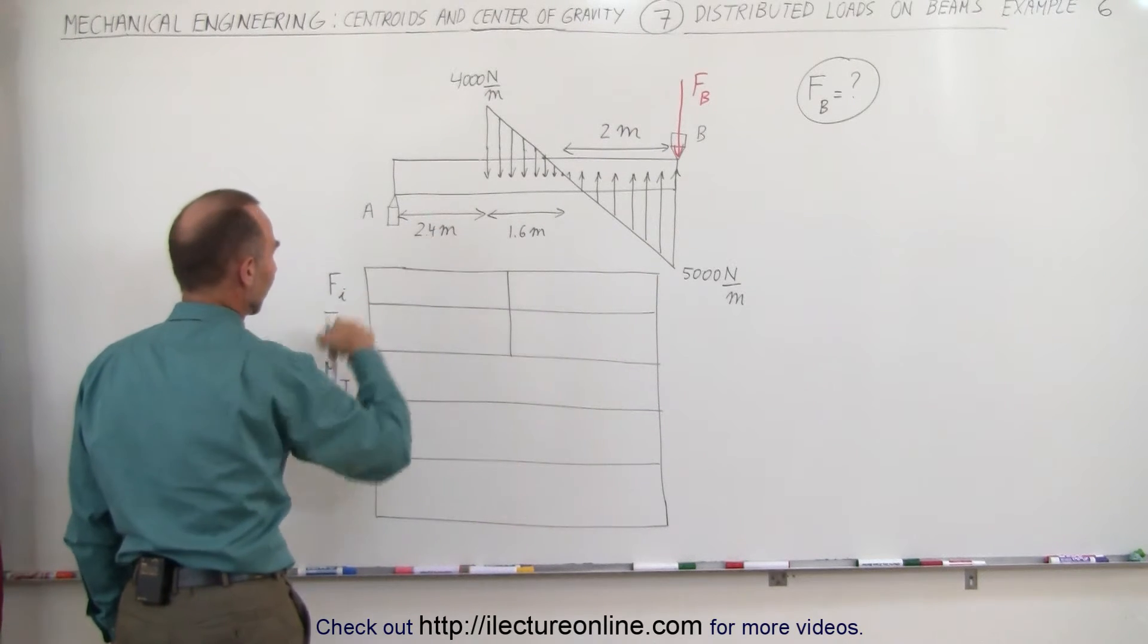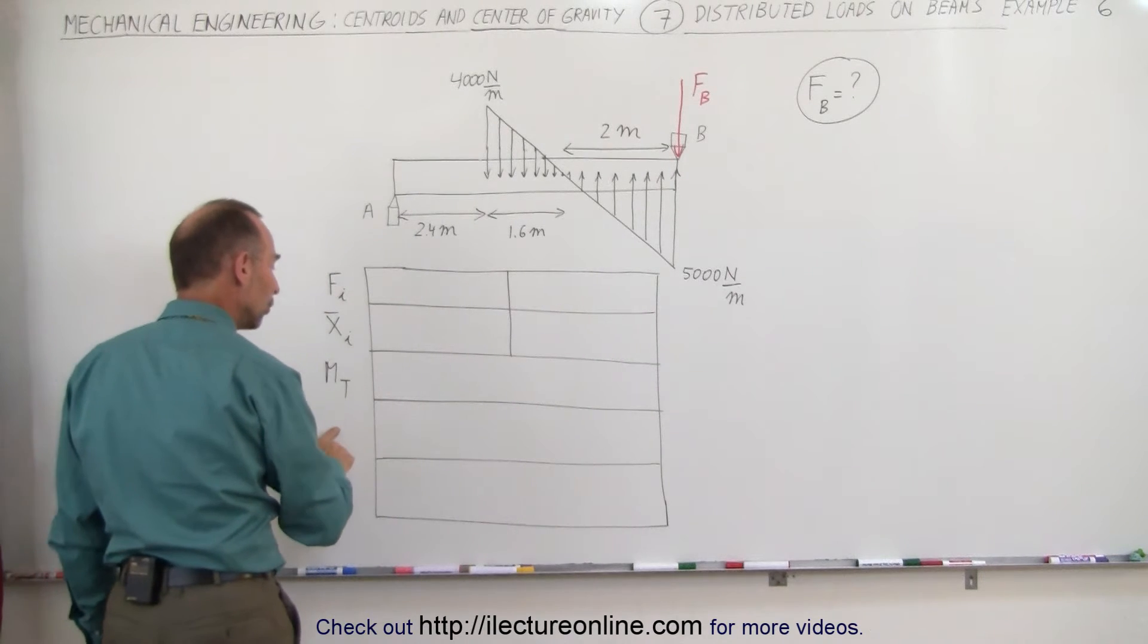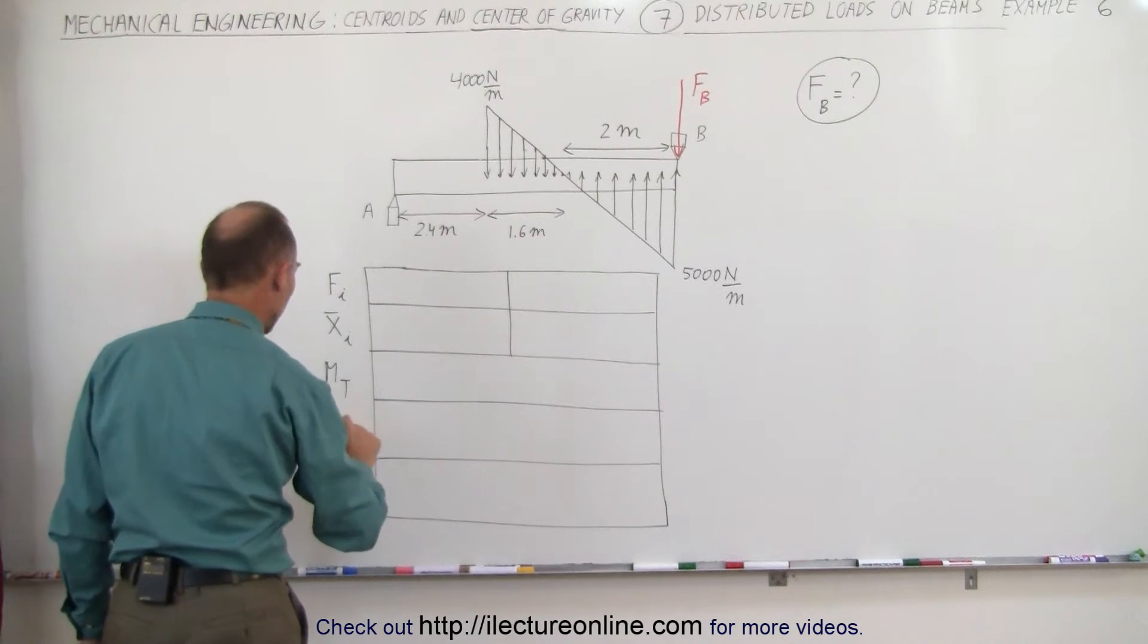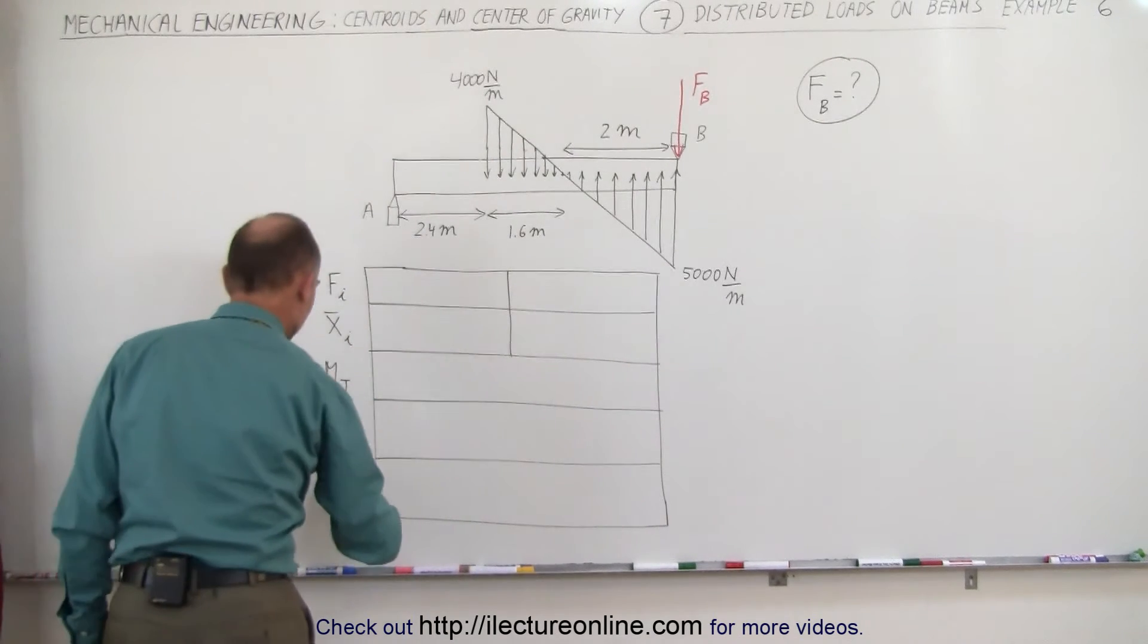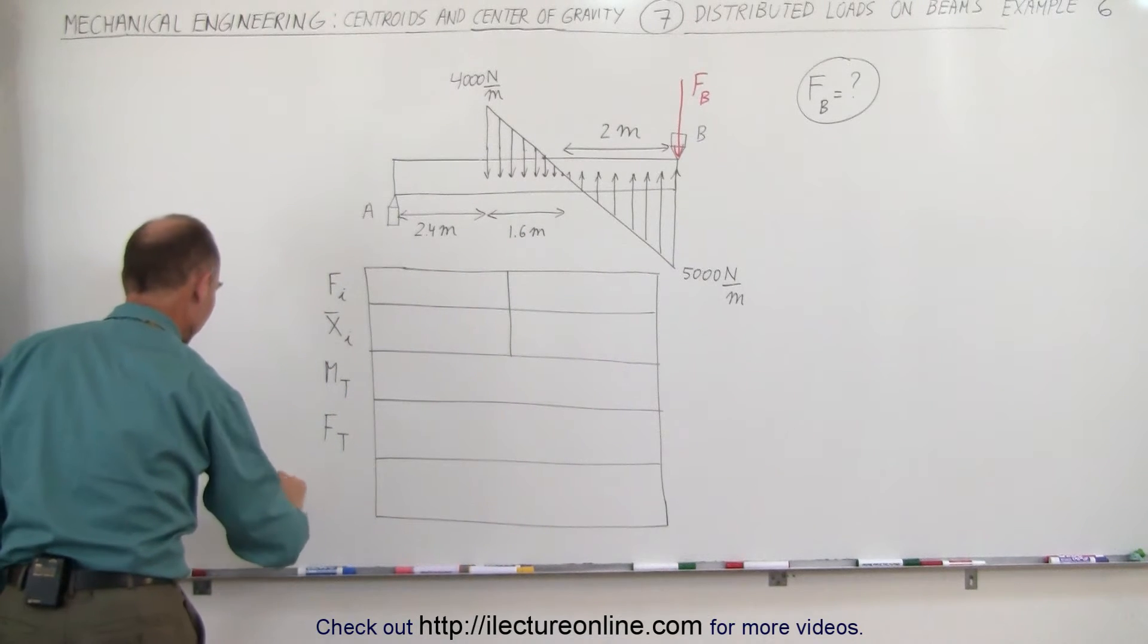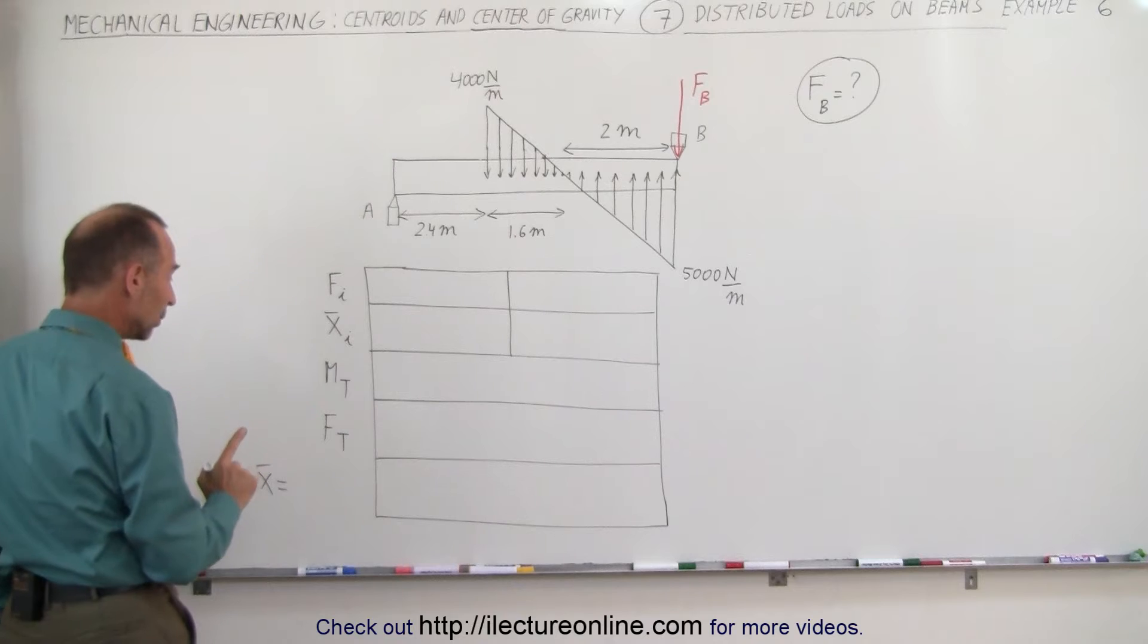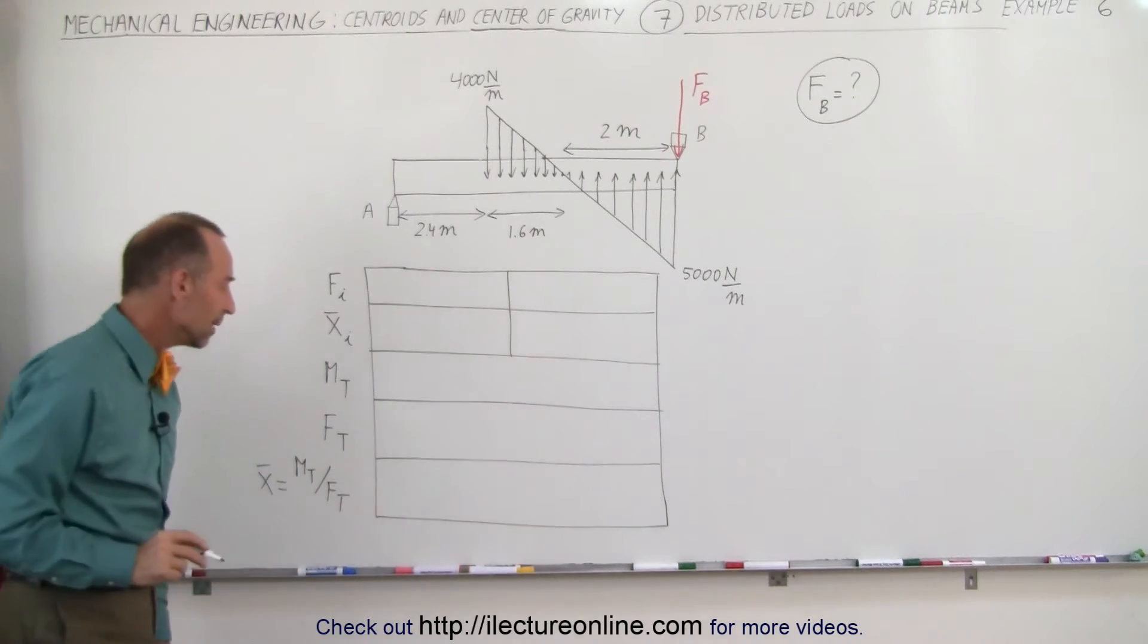In this case we're going to use A as a reference point for the total moment about A. The fourth row represents the total force represented by all the load segments. And finally we have the x-coordinate of the centroid, because we know that it's equal to the total moment divided by the total load on the beam.